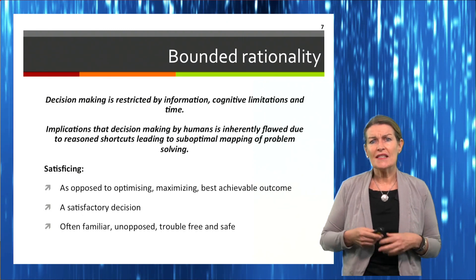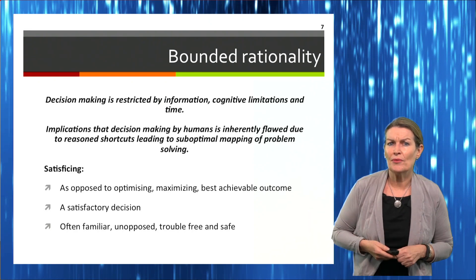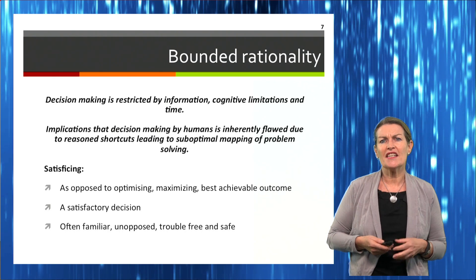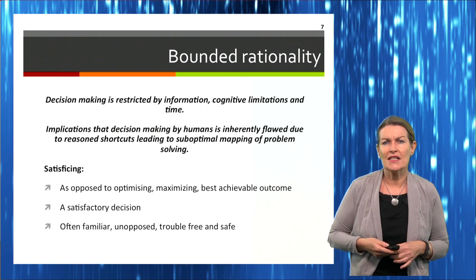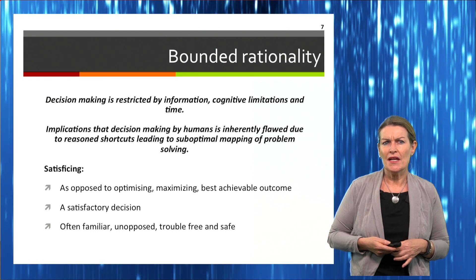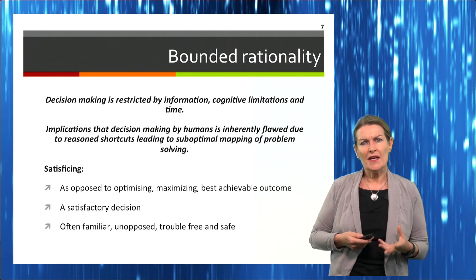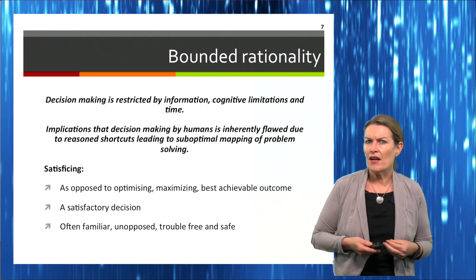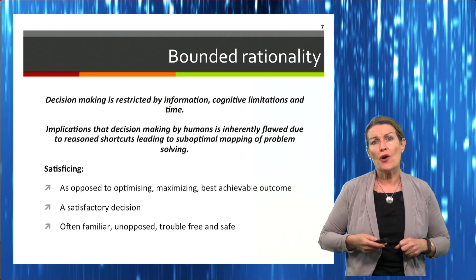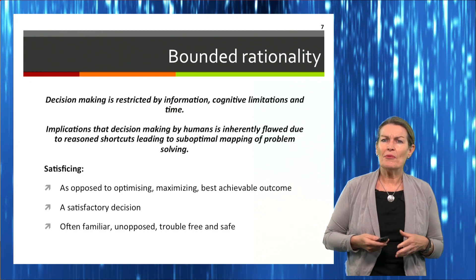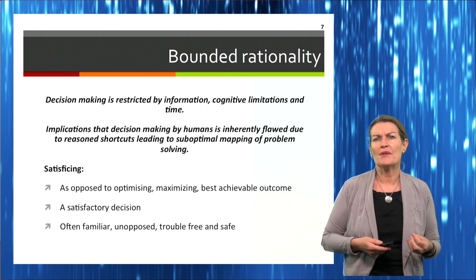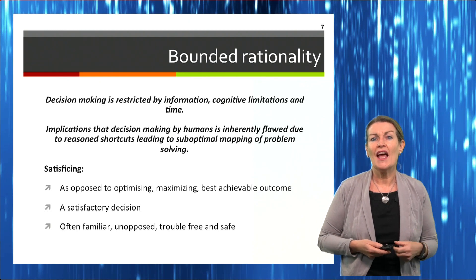Satisficing is opposed to optimizing or maximizing for the best achievable outcome. It's a satisfactory decision — not the best decision — so we cut corners and end up with a satisfactory outcome. It's often a familiar, unopposed, trouble-free, and safe resolution — something we know and understand. Think about groupthink: if everyone agrees on something, we go with the flow and don't actually oppose it. If you're short on time, you're likely to cut corners because you want the most trouble-free and safe solution.